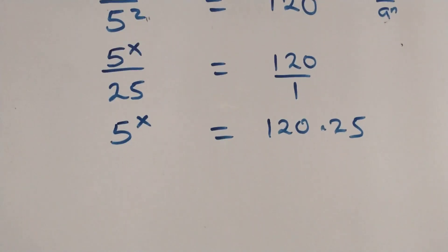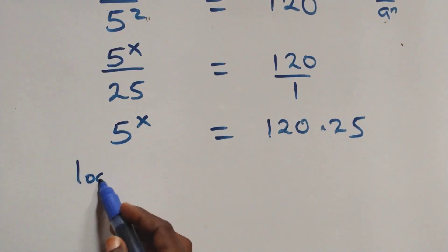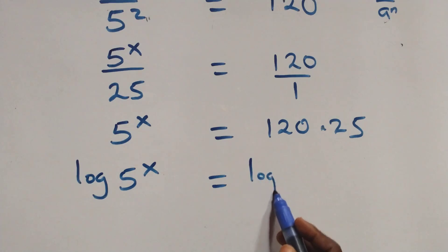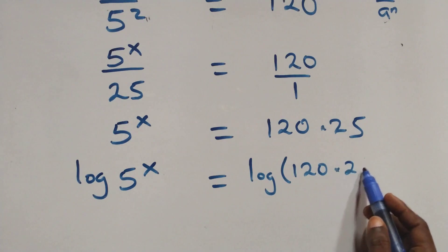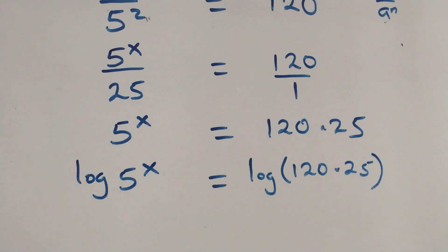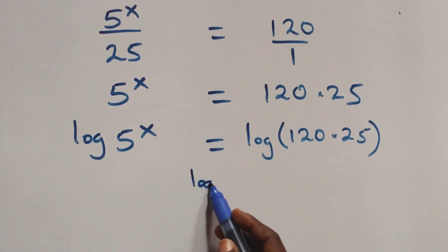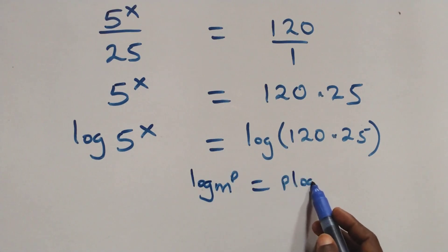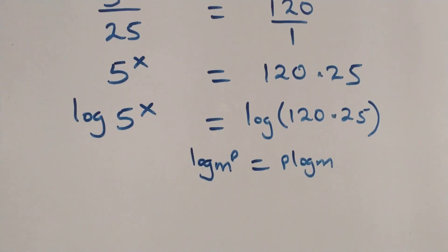The next step here we take the log on both sides. We have log of 5 raised to power x equals to log of 120 times 25. Then from here we apply the power rule of logarithm, where log of n to power p is the same thing as p times log n. At this here we have x times log 5.